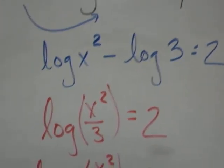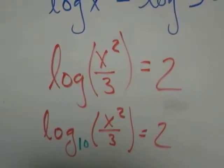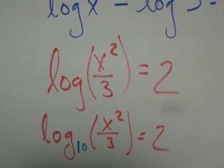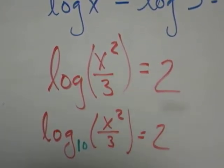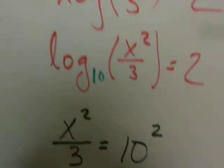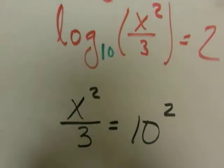Well, this one has an invisible base of ten. Now I can take logarithmic form and turn it into exponential form. So this really becomes x squared over three is equal to ten squared.